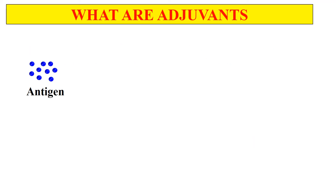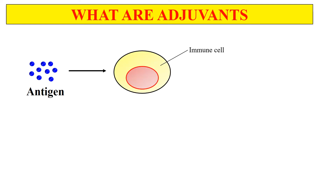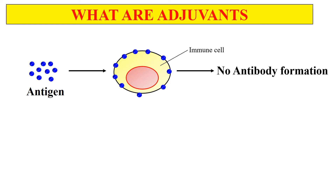Now with the help of animation I will try to clear the concept of adjuvants. These blue dots represent the antigens, or you can say the weak antigen. If the weak antigen interacts with an immune cell — meaning it comes inside the body and interacts with the immune cell — after that interaction there will be no formation of antibody, or no immune response, because the antigen was very weak.